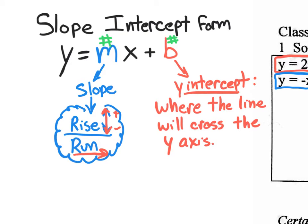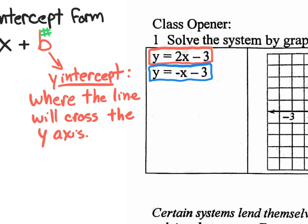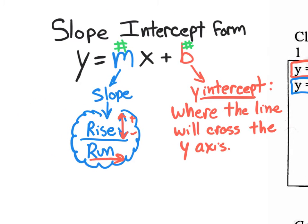If you're wondering what the y-axis is, look at any graph — they'll label the x and put a y right here; that's the y-axis. The b-value tells you where the line crosses the y-axis. A helpful memory trick: the y-axis always points to the sky. You need to know slope-intercept form to graph equations quickly.